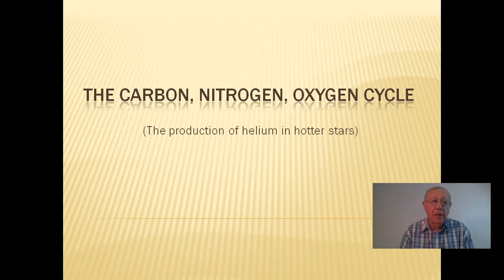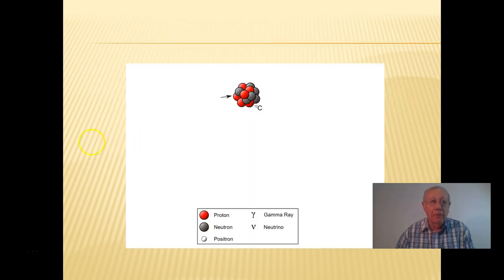Now this happens in hotter stars, and what happens is that in some instances we can get the formation of carbon nuclei, and then that carbon nuclei will collide with a proton. That proton collision then will result in the formation of a gamma photon along with a new atom, and this particular atom is going to be nitrogen.